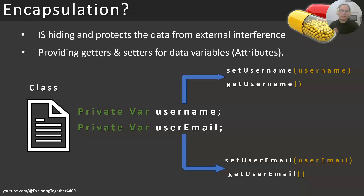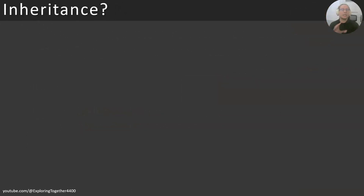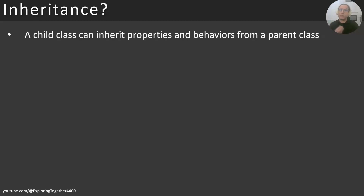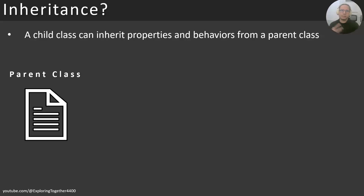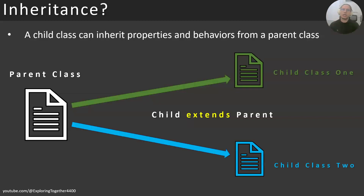With the private keyword, variables are only visible inside the class, giving us the ability to set and get each variable. This way you encapsulate your class and no one can access these variables directly. You can even add specific validation logic inside setters depending on the variable. After encapsulation, we move to inheritance — the third OOP concept. Inheritance means a child class can inherit properties and behavior from a parent class, supporting code reusability and clean code without duplicating logic.